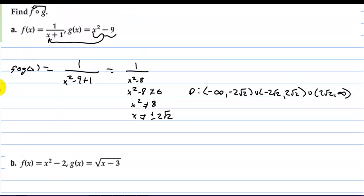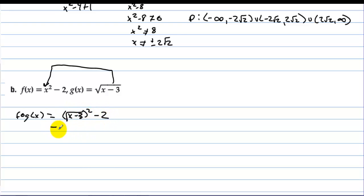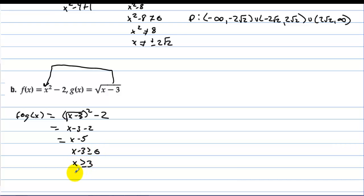For another composition, we find f(g(x)) by replacing x with g(x) in f. The result is the square root of (x minus 3) squared minus 2, which simplifies to x minus 3 minus 2, giving x minus 5. However, we must also check the domain of the inside function: x minus 3 must be greater than or equal to zero, so x must be greater than or equal to 3. The domain is [3, ∞). Always look at the result and the inside function for domain restrictions.